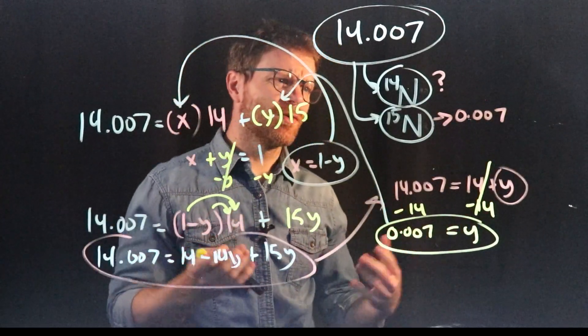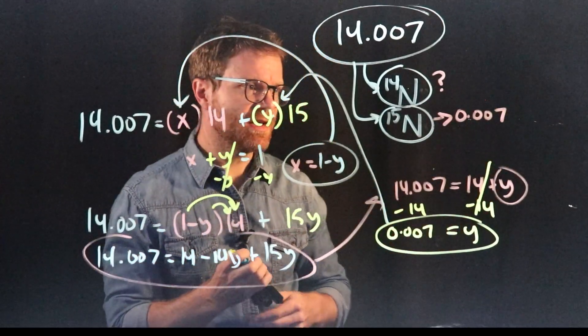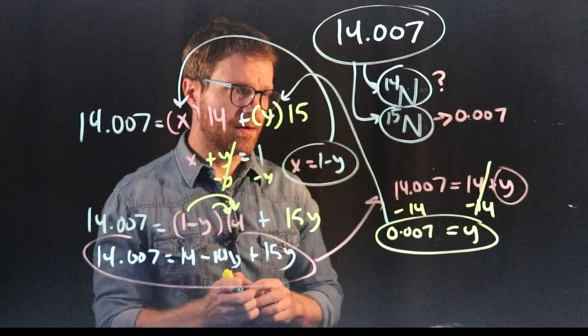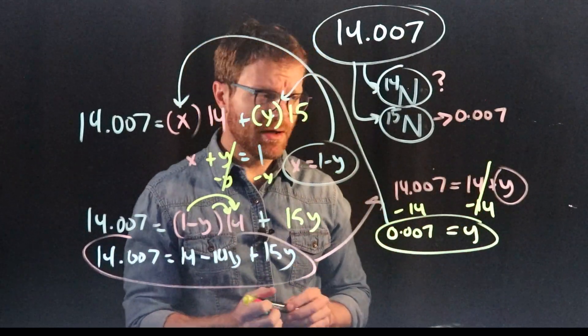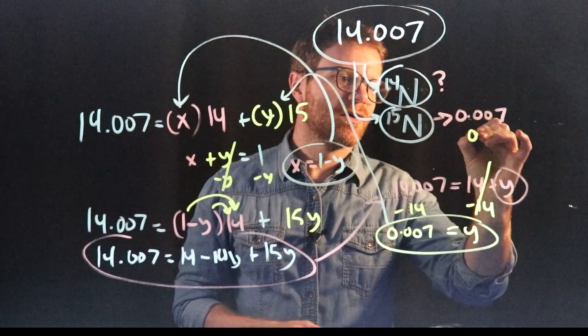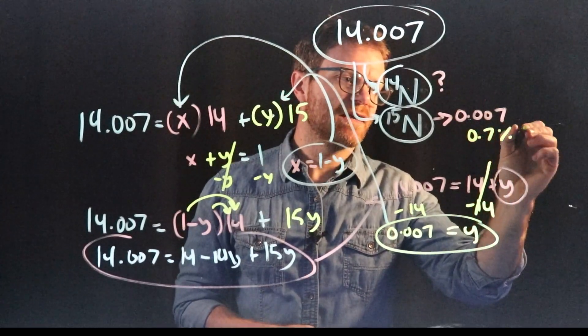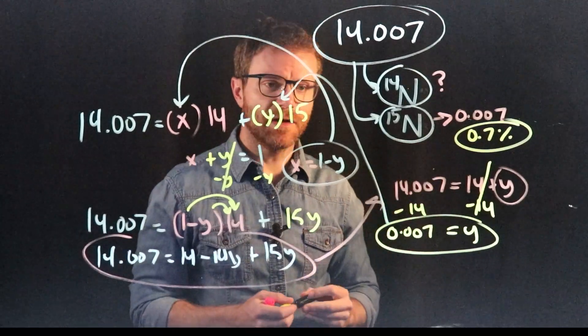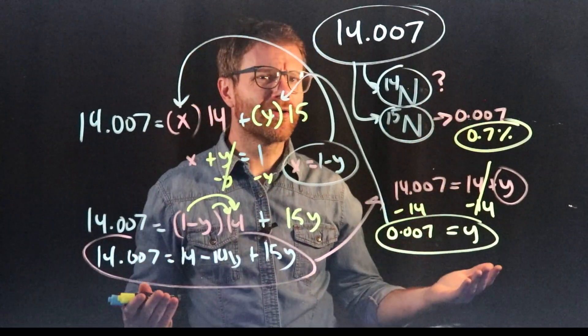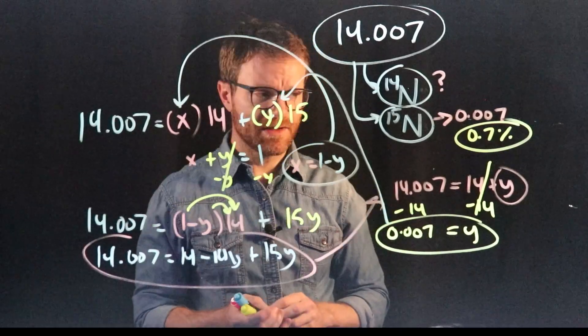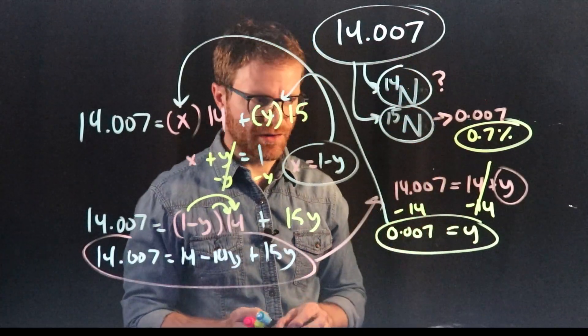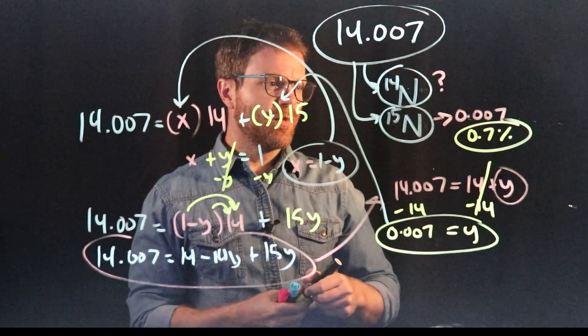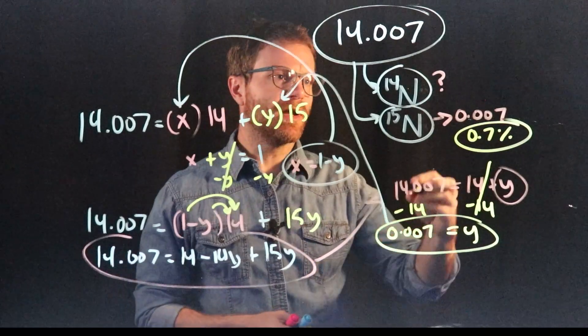So this is 0.007, right? And it's not a percentage. It's a decimal. But we could convert it to a percentage pretty easily by just multiplying by 100. So this becomes 0.7 percent of all nitrogen out there in the world is N15. Well, how much is N14? Well, just 100 percent minus 0.7, because this is the only other version of nitrogen, right? So that would be 99.3 percent.